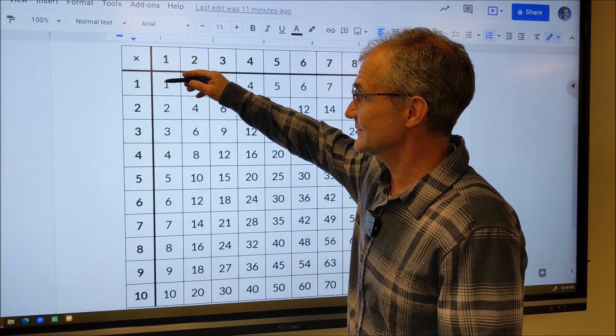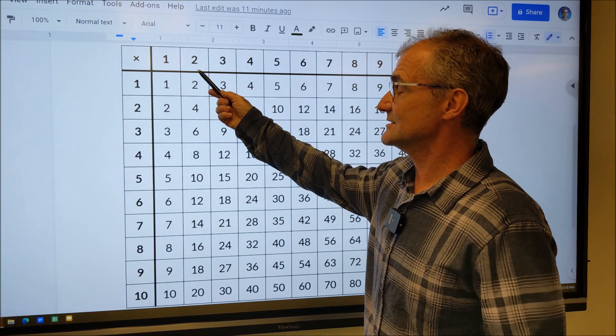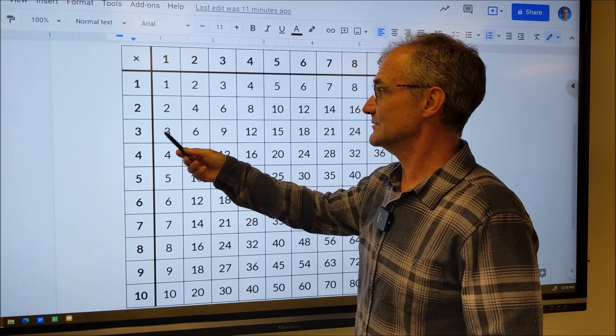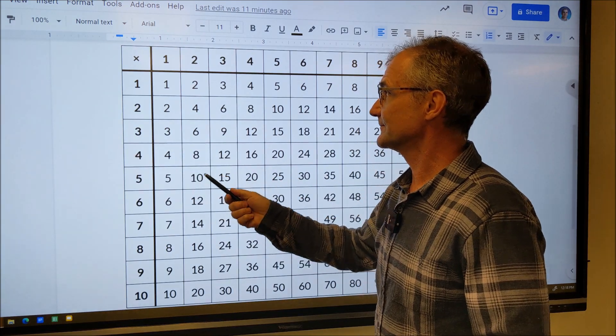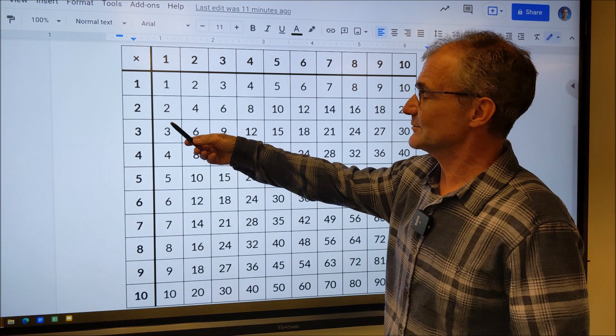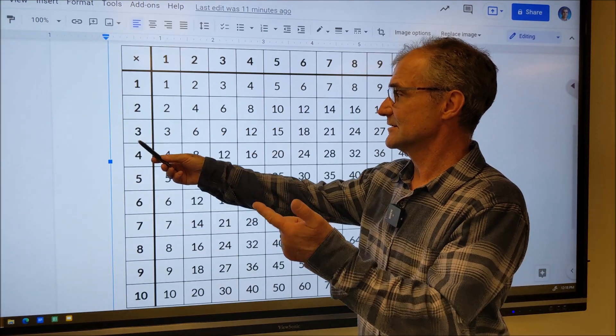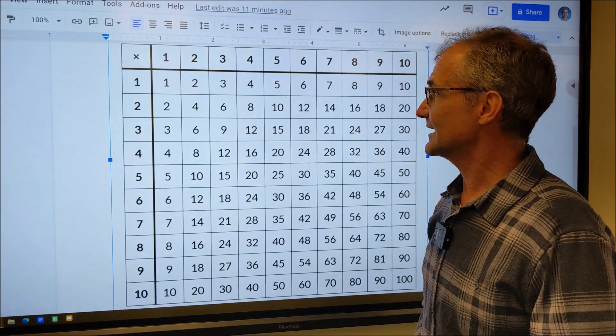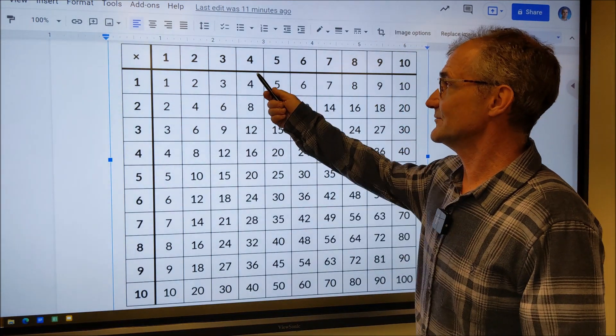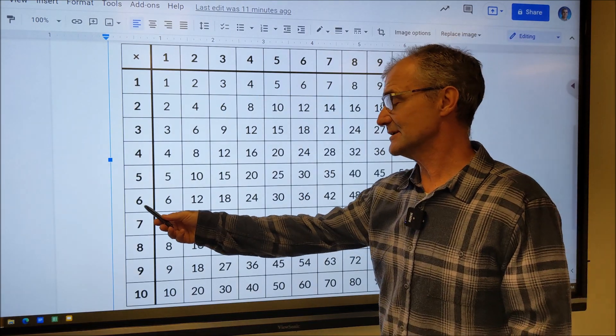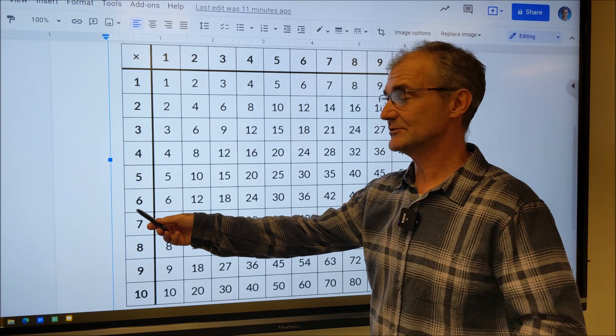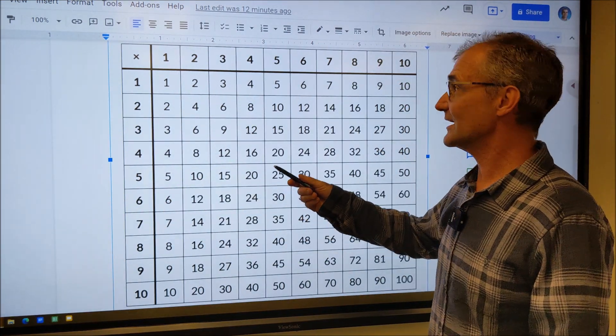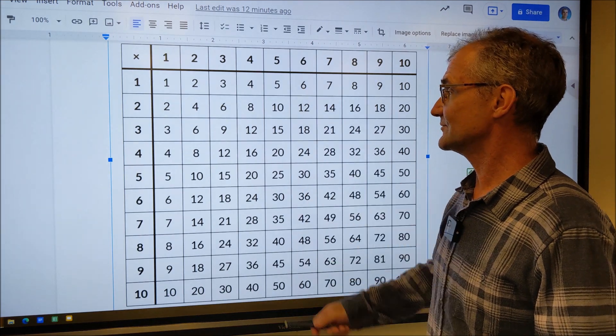The way to remember it is one times anything is the same thing. Twos are easy enough because you just double the number. So you double a one, double a two, double a three, double a four. Threes aren't too bad either. You're just going to triple the number in your head. So two, four, six, three, six, nine, four, eight, twelve. If you could count by threes, that helps a lot. And then fours aren't too bad either. So on a four, I double the number, twelve, and then I double that number, twenty-four. So six and four is twenty-four. Fives, you should be able to count by fives. Count all the way up backwards until you get it down.